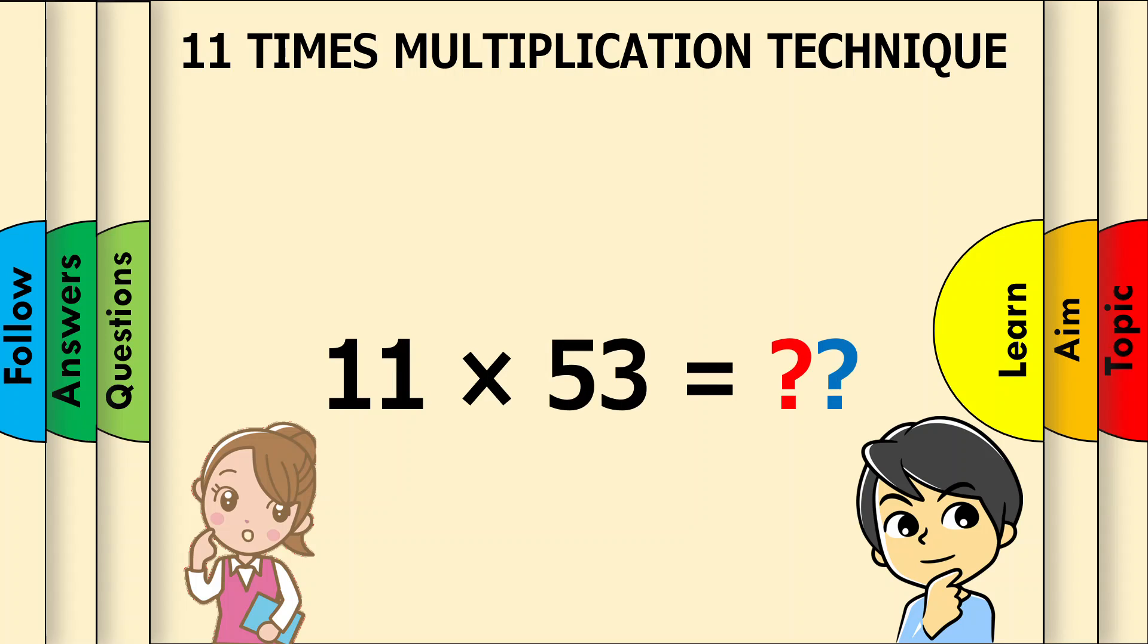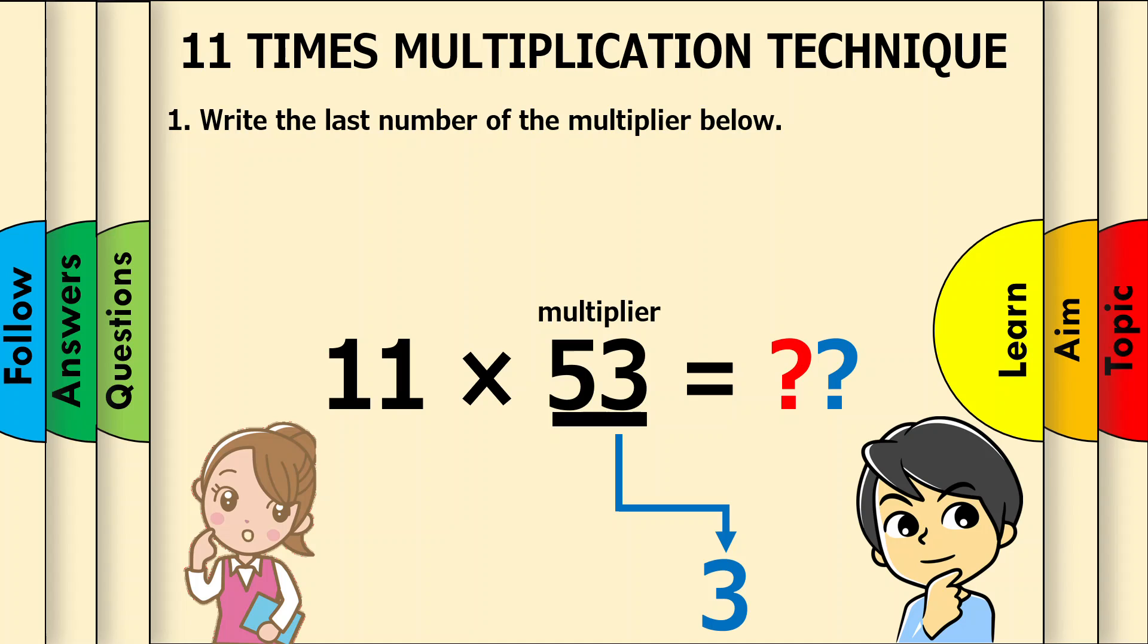First, write the last number of the multiplier below. In this example, 53 is the multiplier, so write 3 below. Now add together the digits of the multiplier. The two digits are 5 and 3, so do 5 add 3, which is 8.